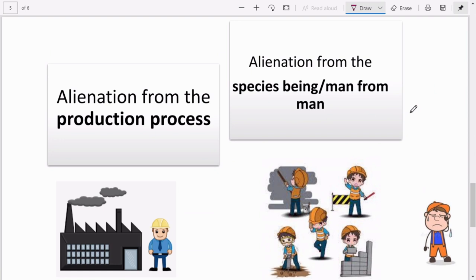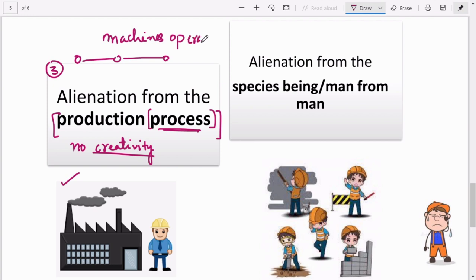The third type is alienation from the production process. This is very important. Suppose you work in a factory or you are any worker from any place. The production process is dictated to you - there is no creativity that you can show. Suppose in the production process you want to show your creative side, you cannot, because in capitalism the production process is already dictated to you. Let's say there are machines - you have to operate the machines, that itself is your work. You cannot add anything or delete anything from the process.